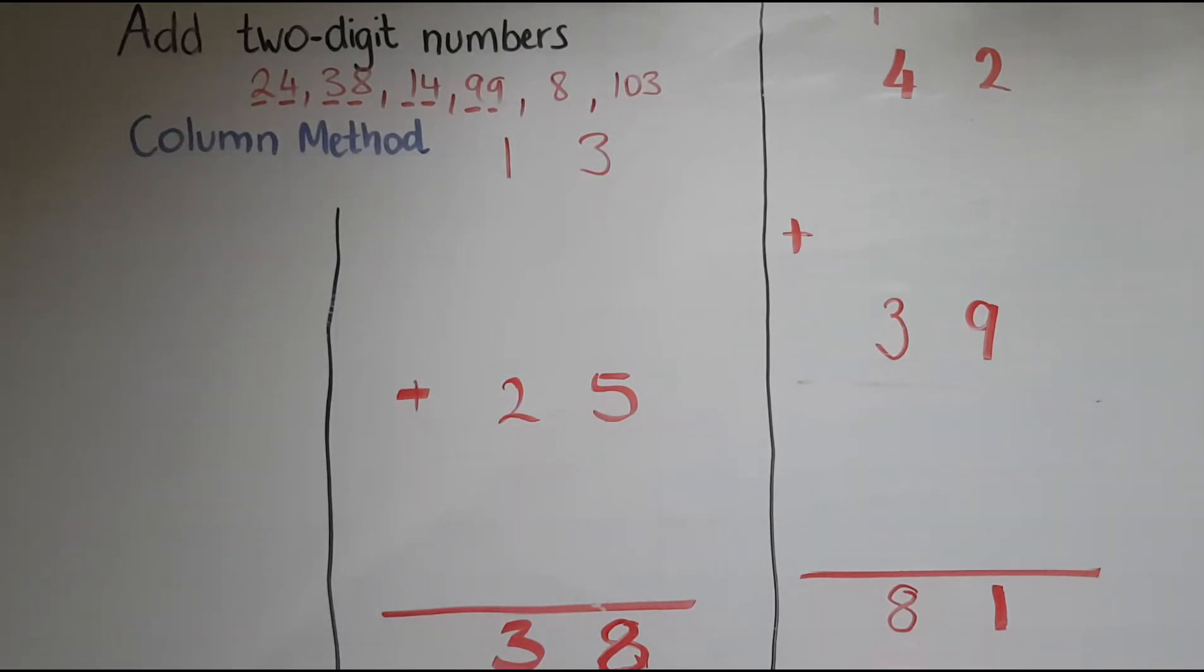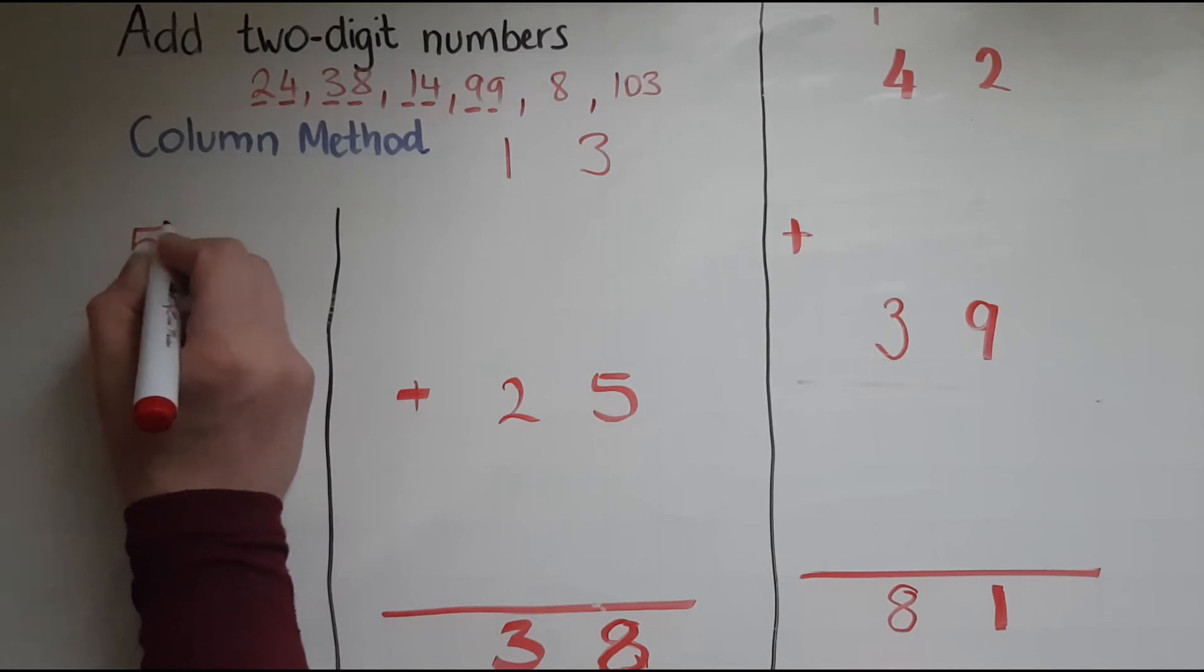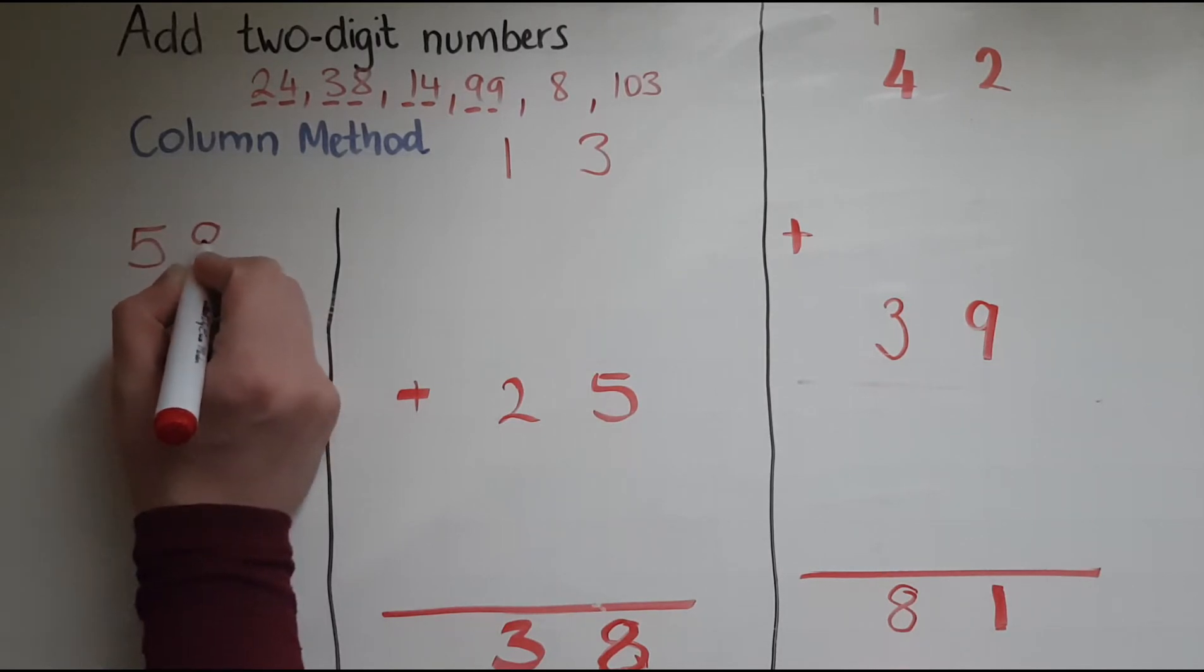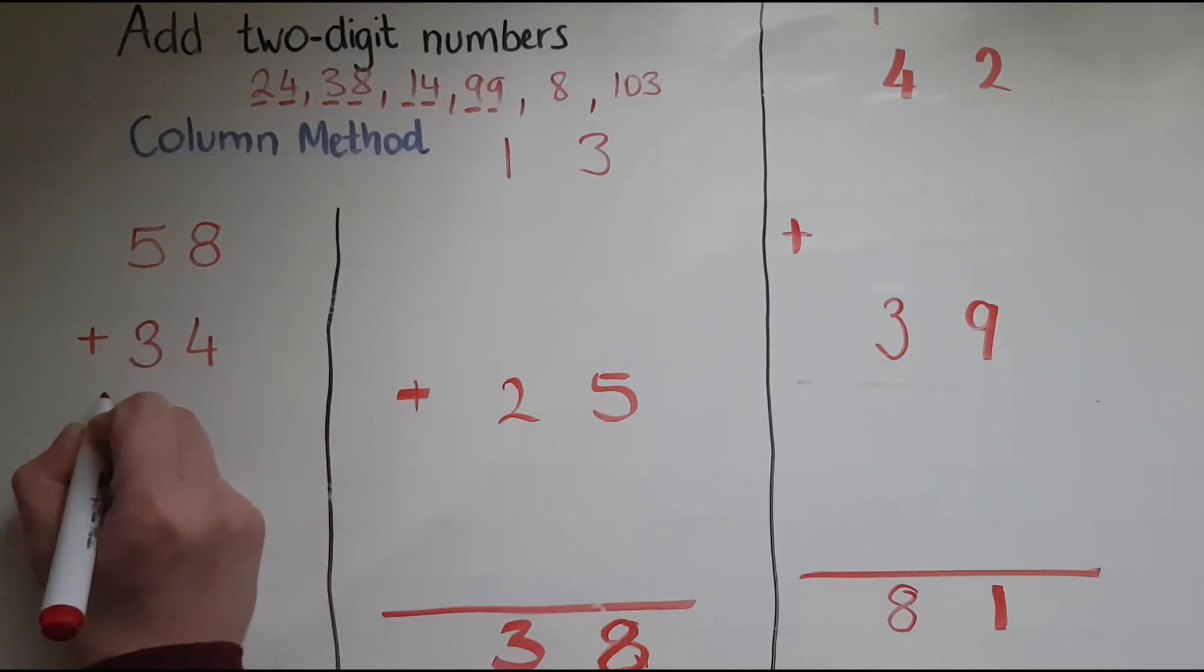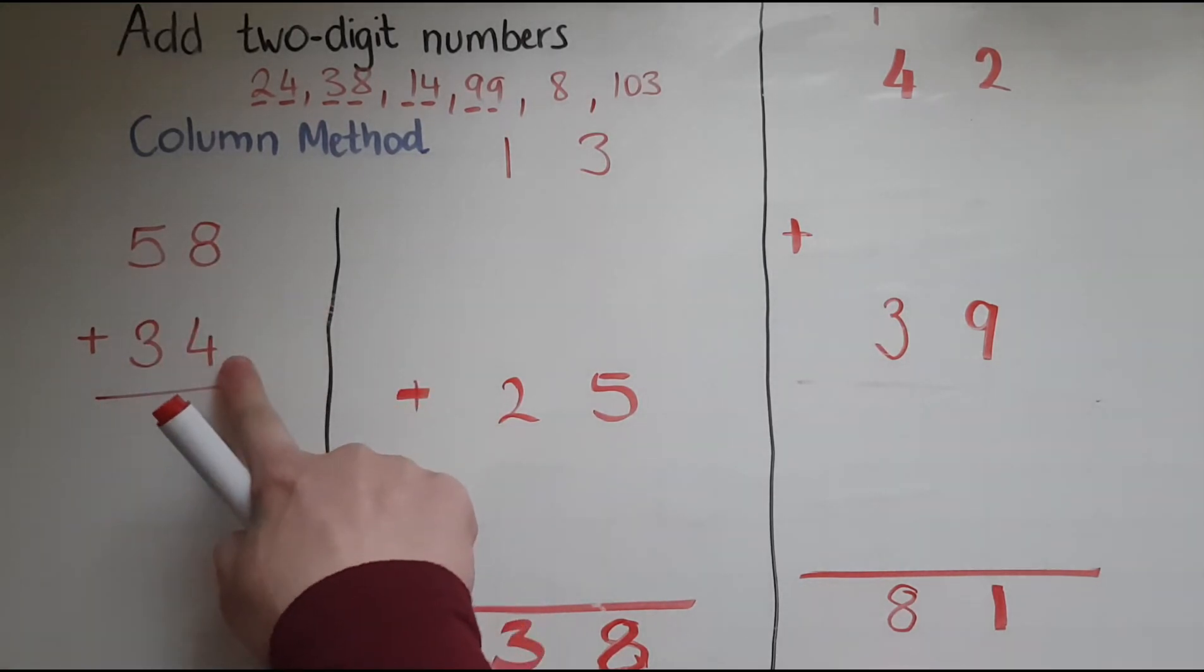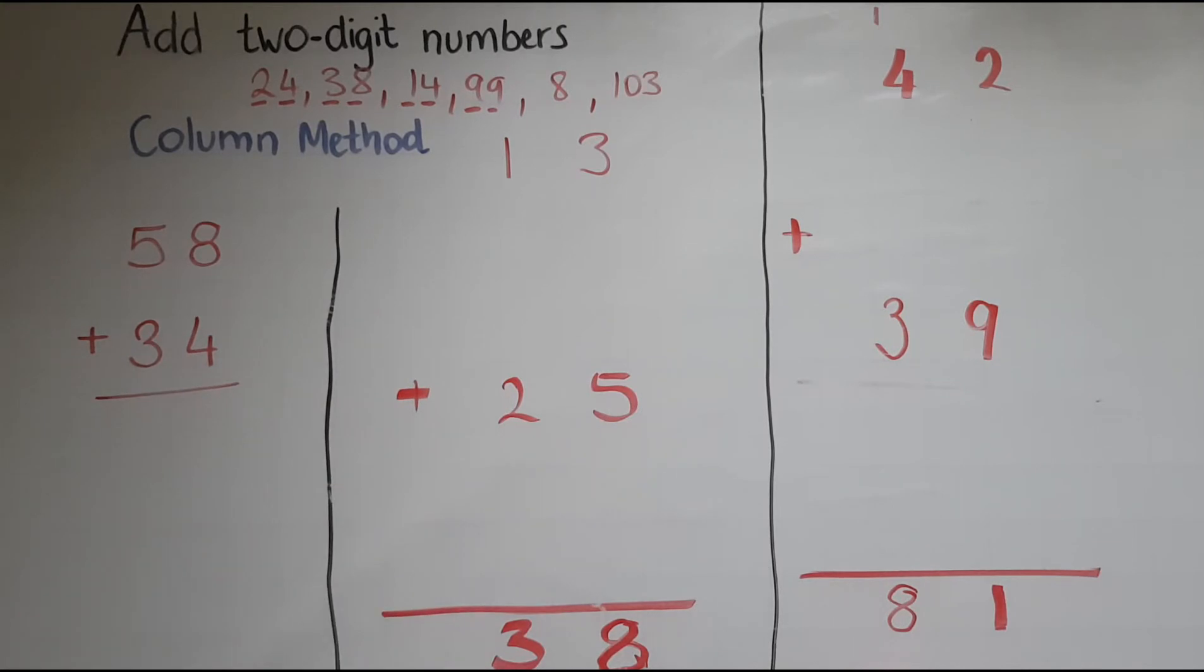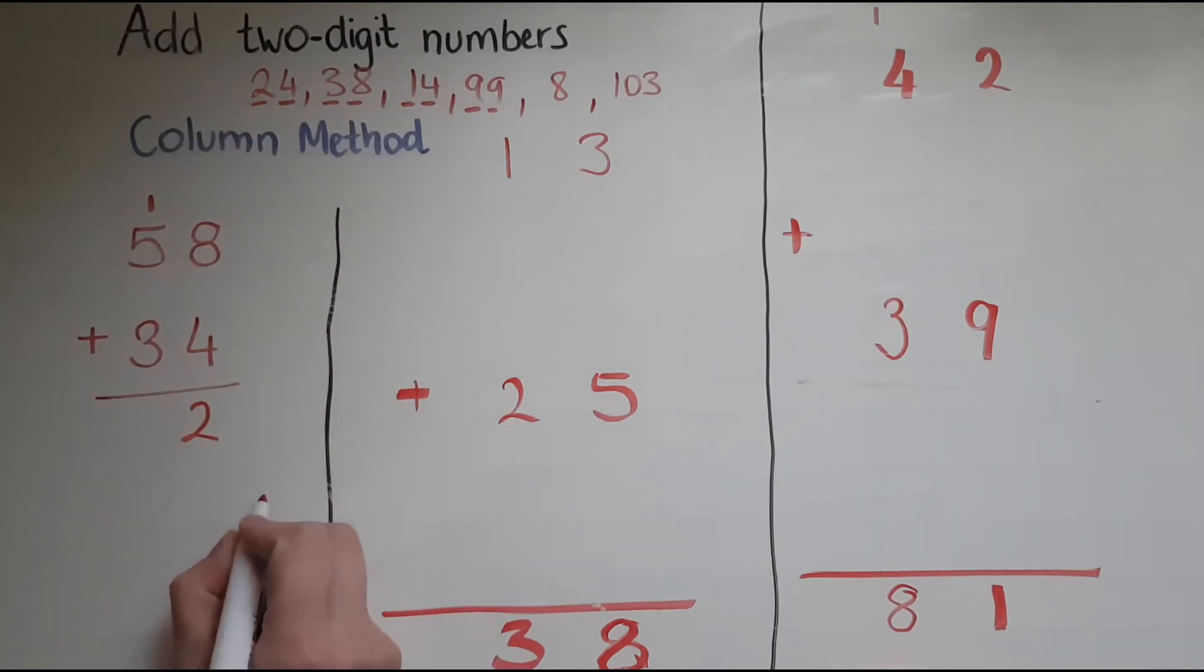I'll do just one more example without the cubes. So I've got now 58 plus 34. So I've got 8 and 4. That makes 12. So I'll put the 2 down and the 10 goes over there. So in this 12, when I added 4 and 8, I'm keeping the units here where the units should be, and this one which represents the tens goes to the top.